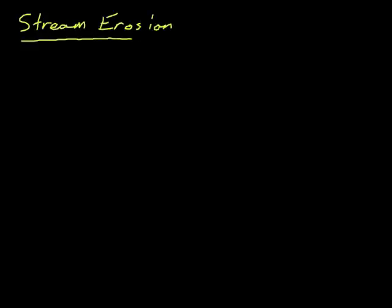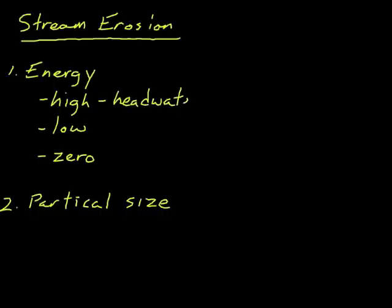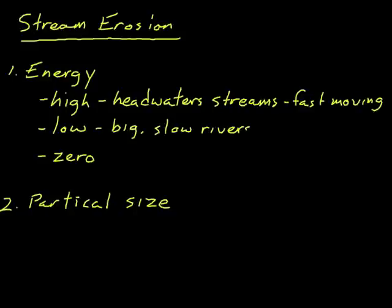Let's look at this in two different ways. First, let's talk about the energy of a stream, and then we'll talk about the particle size of the particles being carried. For energy, we can have high energy, low energy, or zero energy. High energy would be a headwater stream — a stream high in the mountains moving fast. Low energy streams are big, slow rivers. Zero energy would be a pool like a lake or the ocean.